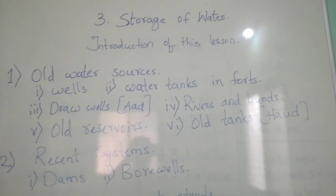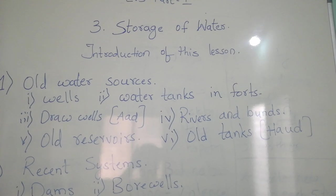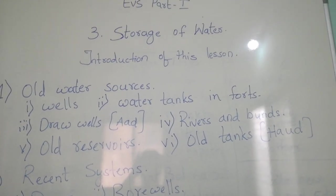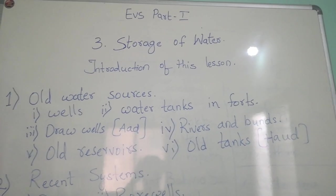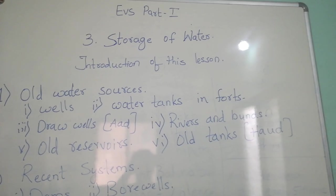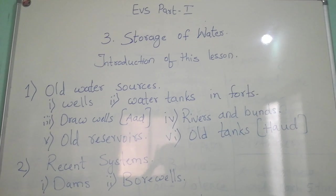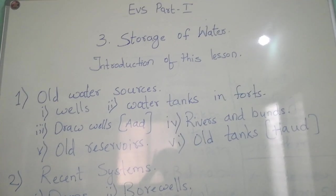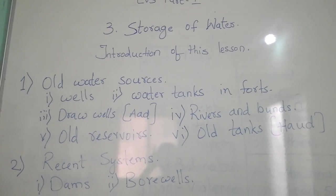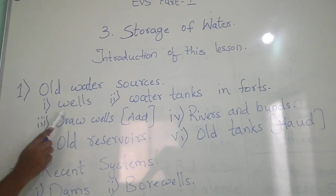Old water sources. First one is wells. Do you know wells? Wells means some water seeps into the ground, and we dig to obtain this water — this is known as wells. When it rains, the ground absorbs the water, and then we dig to obtain it. That is known as wells.